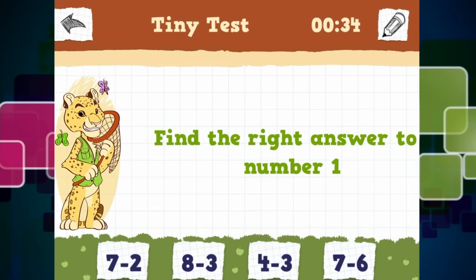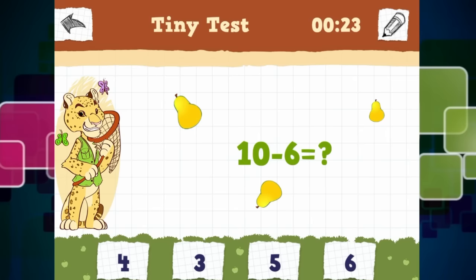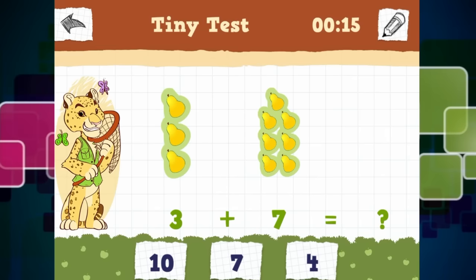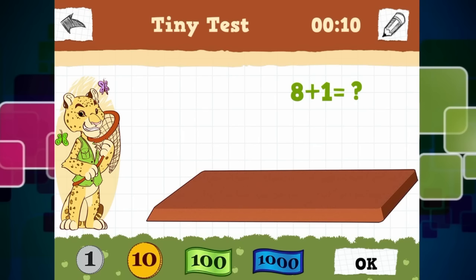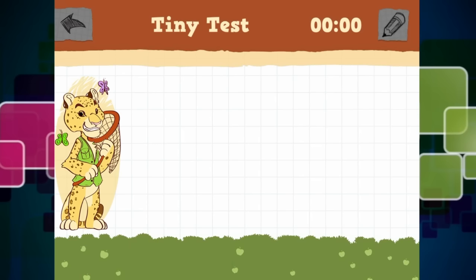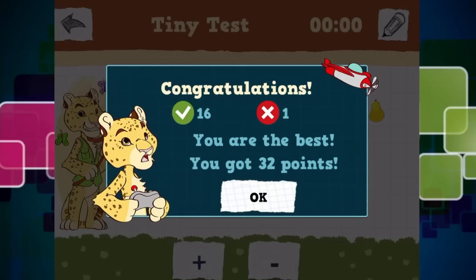Find the right answer to number one. So let's see. Four take away three is one. Seven take away six is also one. Ten take away six is four. And three plus seven is ten. Eight plus one is nine. So one, two, three, four, five, six, seven, eight, nine. Yes. Just double check it that time because I got it wrong last time, didn't I?